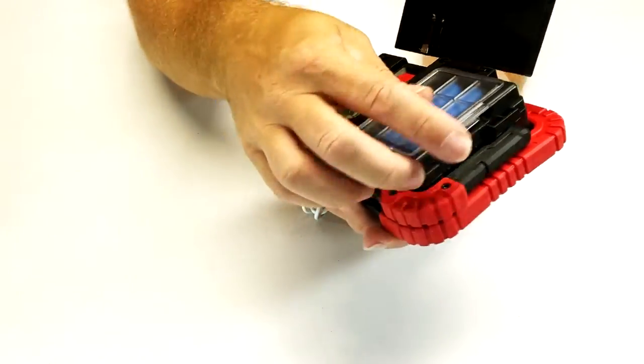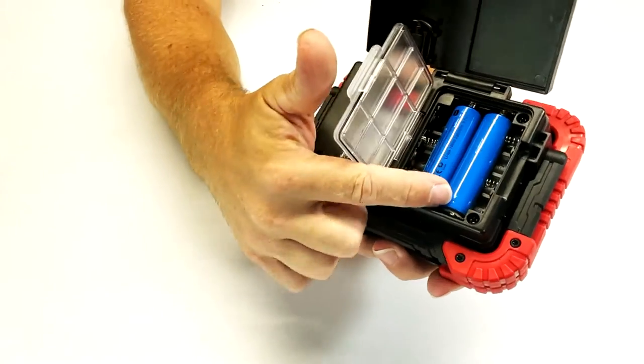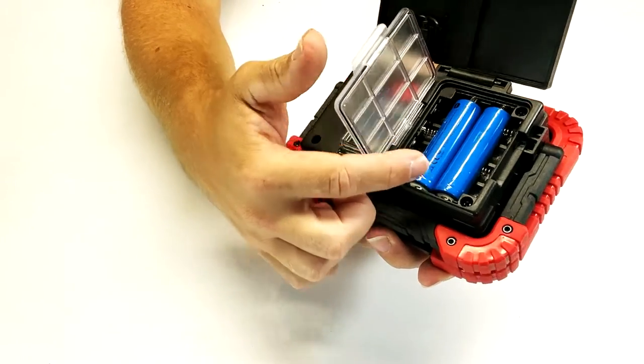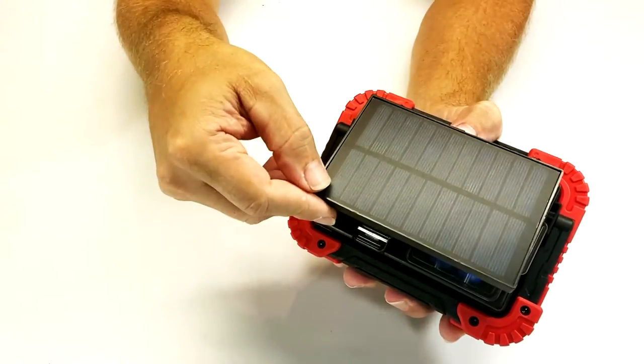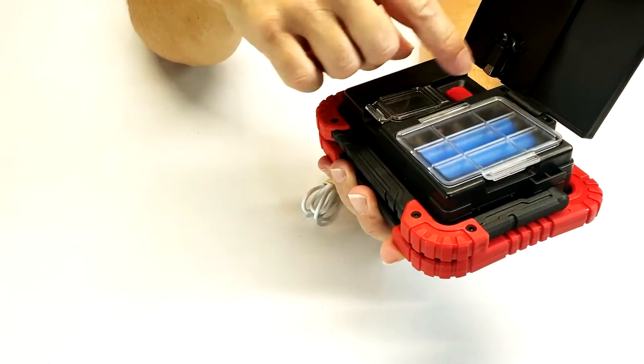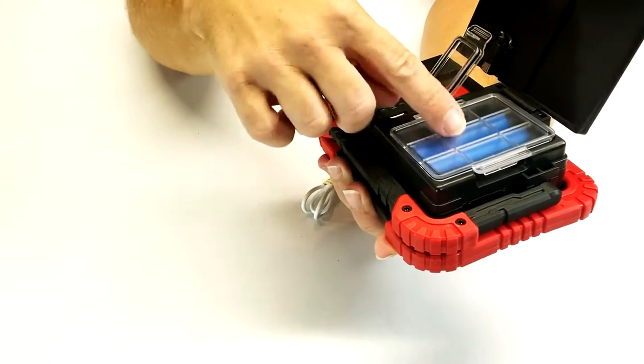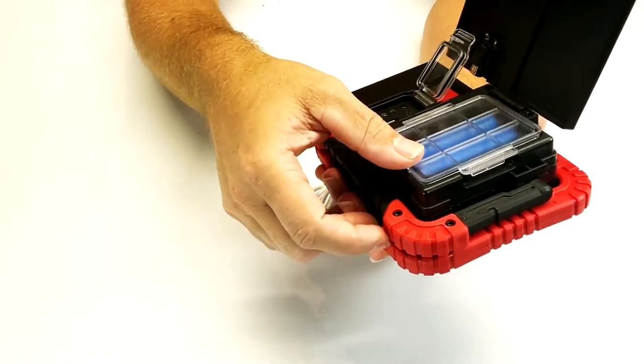These batteries that it comes with are two lithium rechargeable batteries. So basically, when you're using the solar panel to charge, you're going to plug that into the input and that's going to charge the batteries.